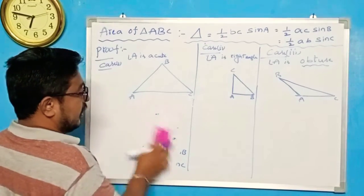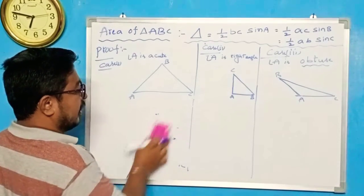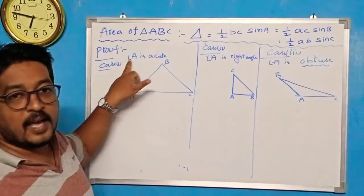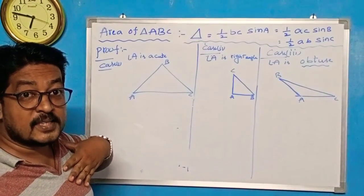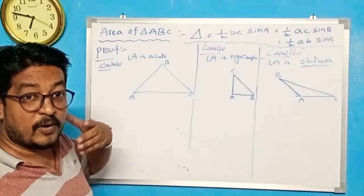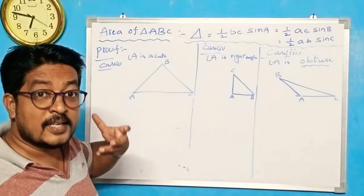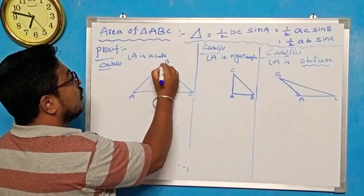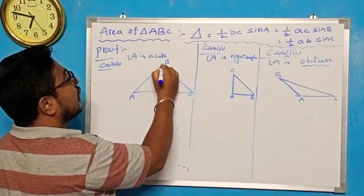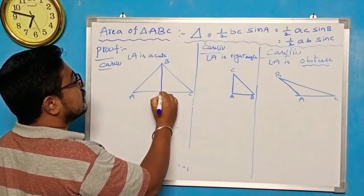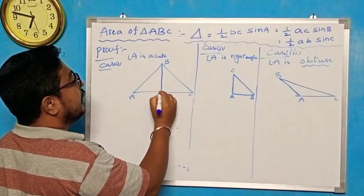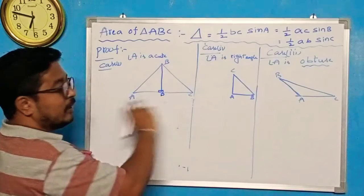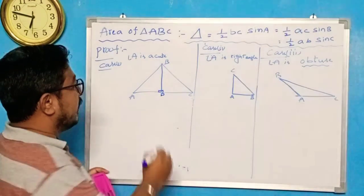Now I can prove the area of triangle. Case 1: A is the acute angle. My angle is A, so I want to prove half BC sin A. I draw one perpendicular — that is BD perpendicular to AC. It is 90 degrees, a right angle.